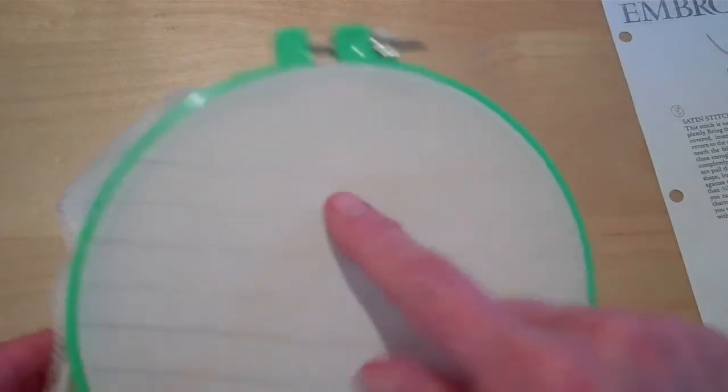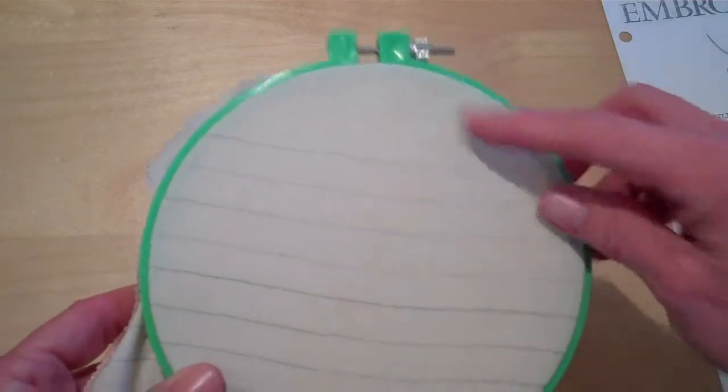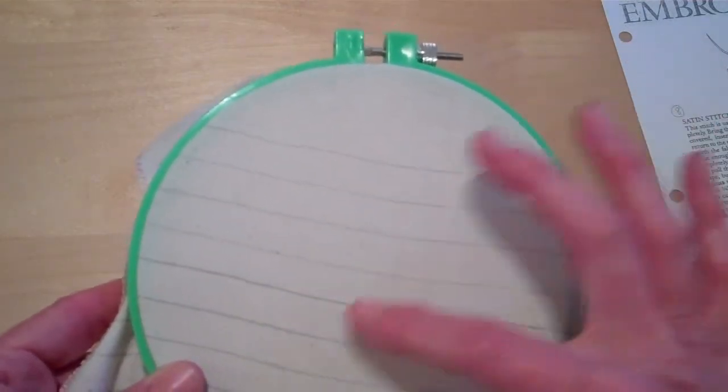For the first row that you're doing of French knots, you'll want to move the fabric down a little bit so that this isn't too close to the top, so that you have a little room to work. And then as you do each row of stitches, you'll move it up and down when you need to.